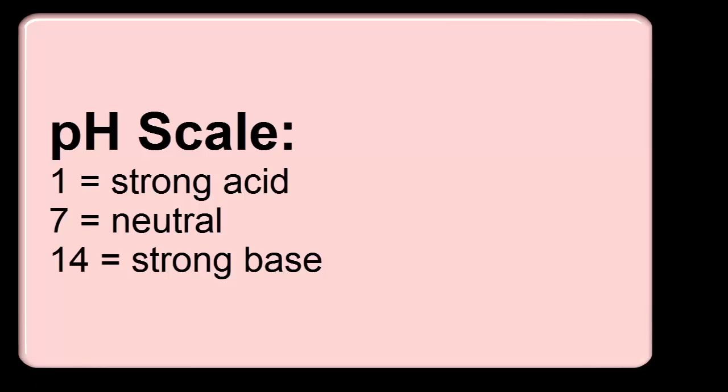Last but not least, how do you read the pH scale? The pH scale runs from 0 to 14. The further you go down on the scale — the lower the numbers — the more acidic something is. The higher you go on the scale, the more basic it is. Down in the 1 range you are getting to a very, very strong acid, something like hydrochloric acid. At 14 you are as strongly basic as can be. 7 is right in the middle — pure distilled water would be a 7, and that is neutral. It's not acidic or basic.